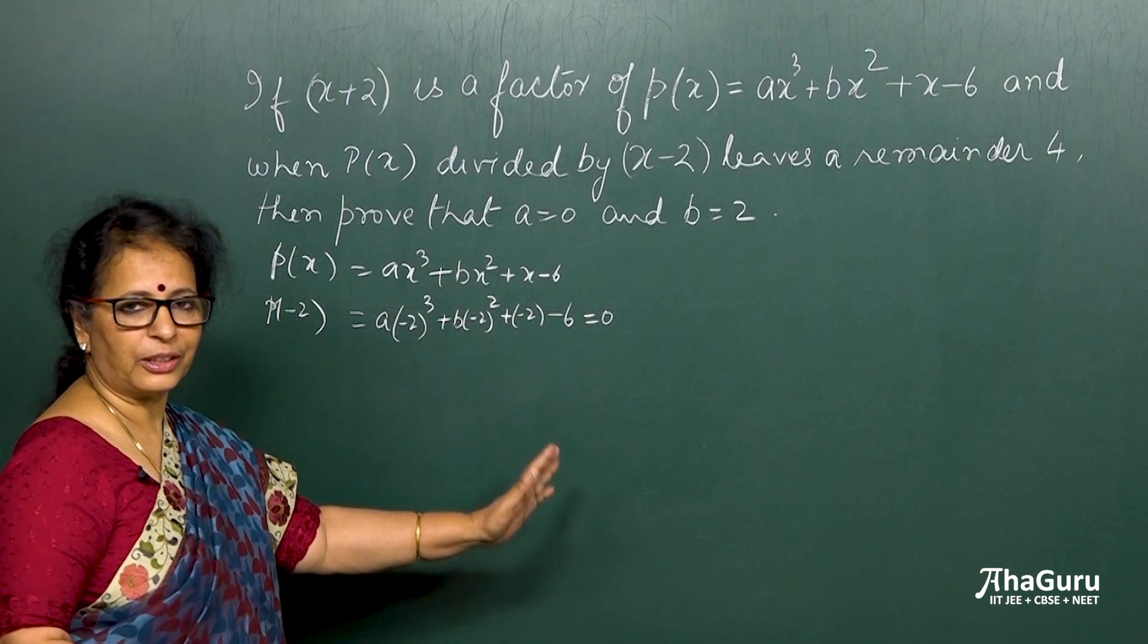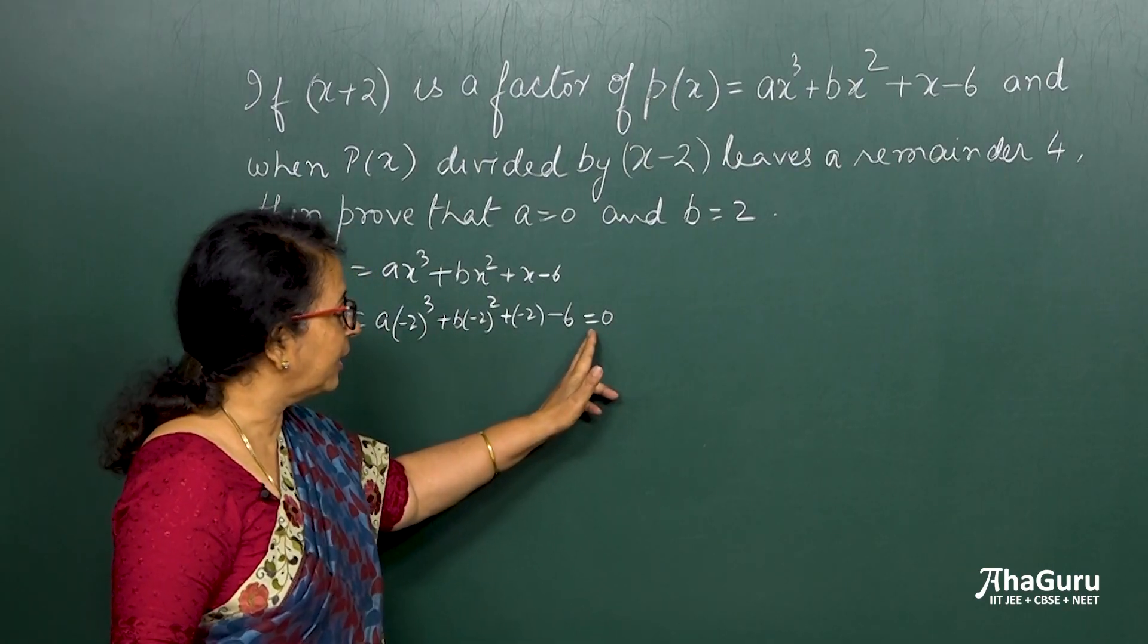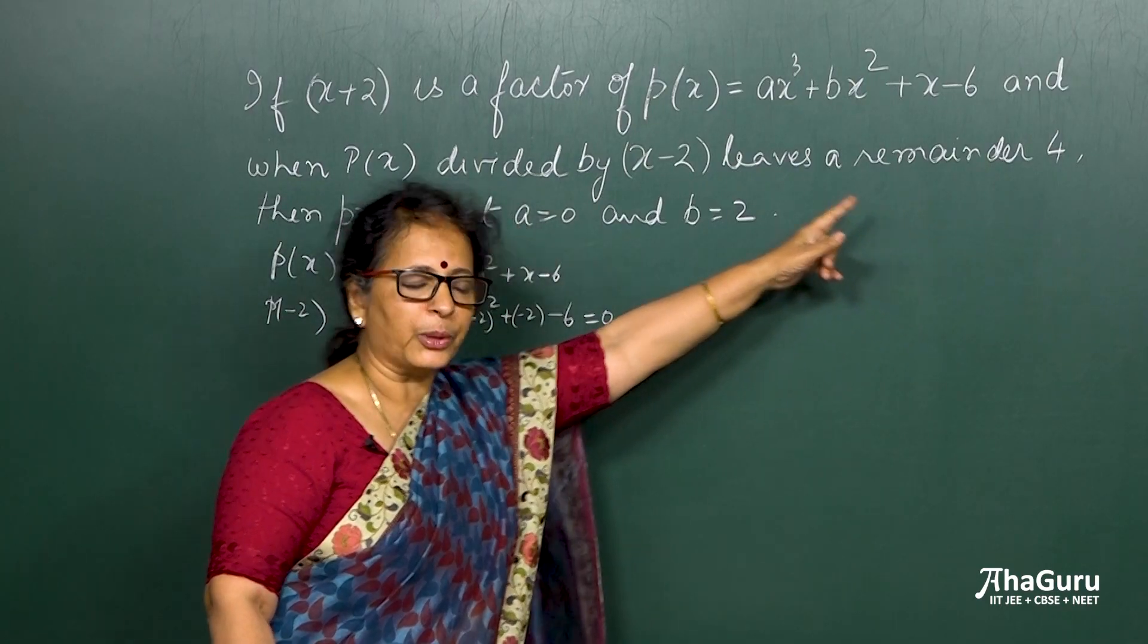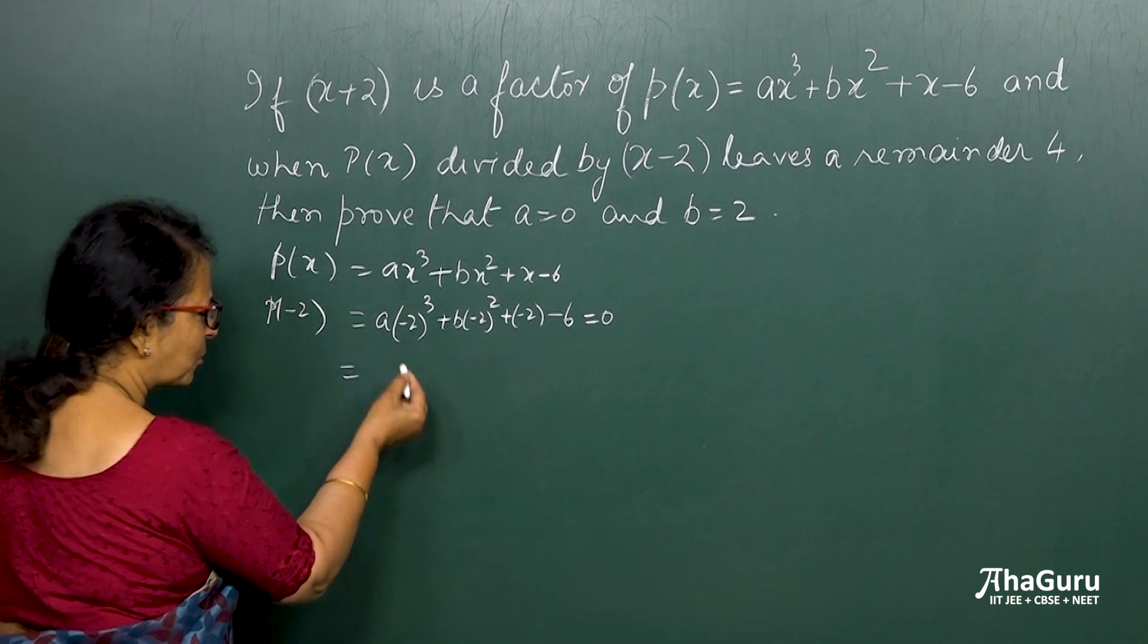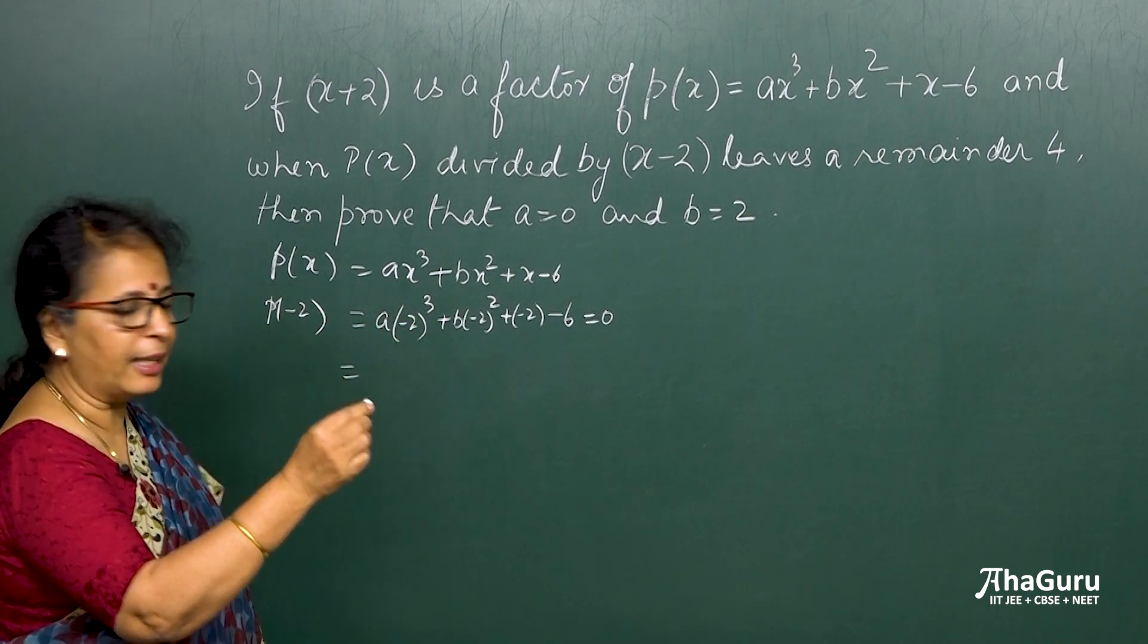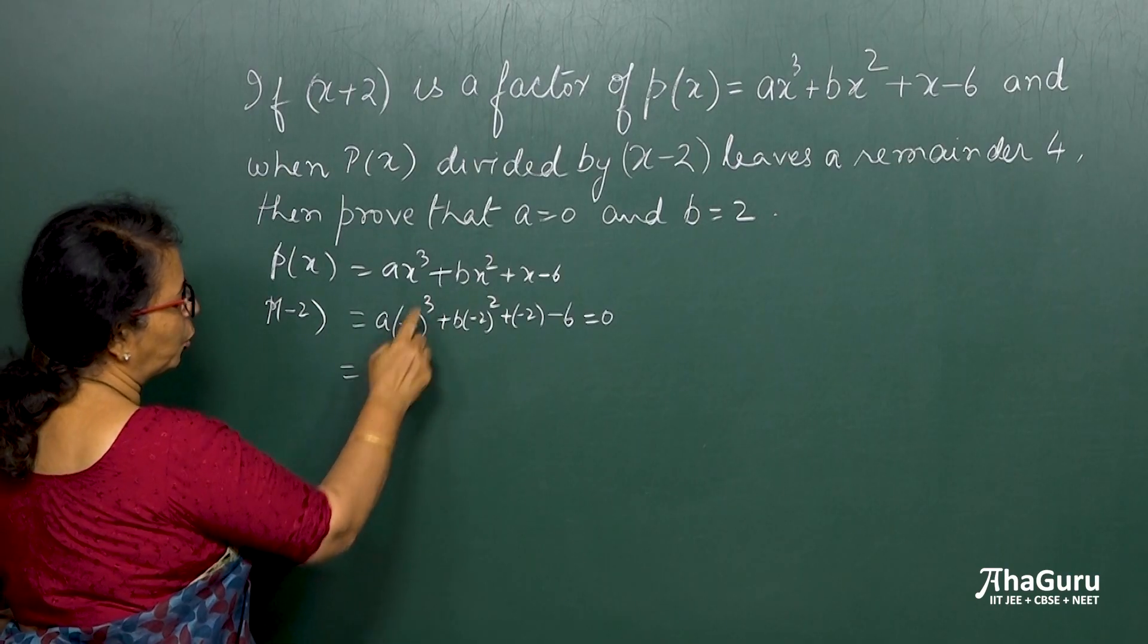Because this is a factor theorem. Had it been the remainder theorem, I will write the remainder here. That is what I am going to do for the next one. So here it is equal to 0. So all I have to do is just solve it. Still a and b will be there.